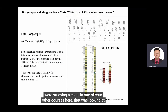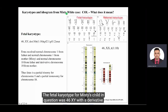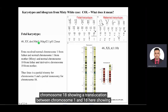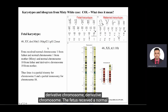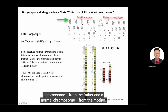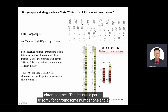The child in question was 46 XY with a derivative chromosome 18 showing a translocation between chromosome 1 and chromosome 18. Shown here is the position of the translocation and the derivative chromosomes. The fetus received a normal chromosome 1 from the father, a chromosome 1 from the mother, and chromosome 18 from the mother. This is the mother's ideogram in relation to these two chromosomes. The fetus is a partial trisomy for chromosome number 1.